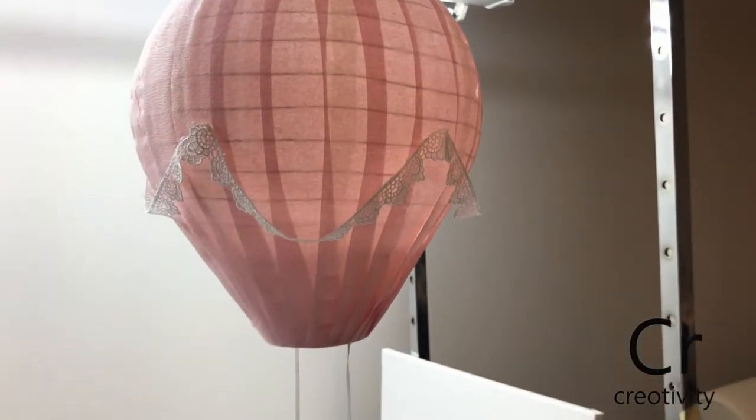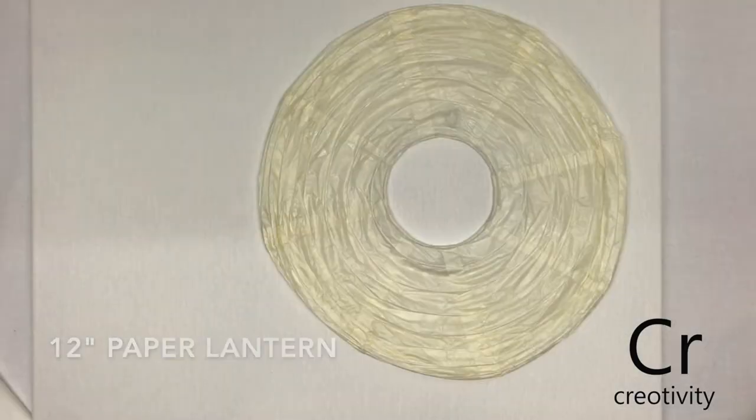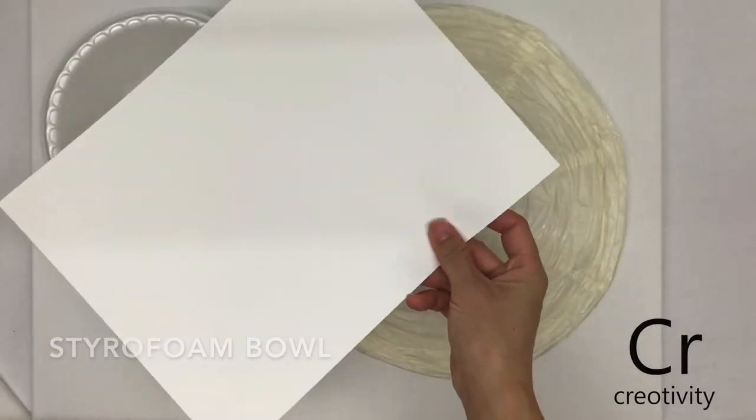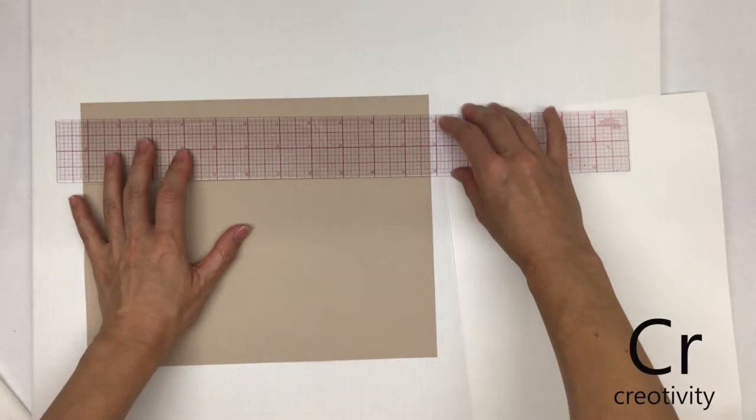I have a 12 inch lantern, a styrofoam bowl, and eight and a half by eleven white and brown cardstock. Measure out two and a half inch strips, cut them out.